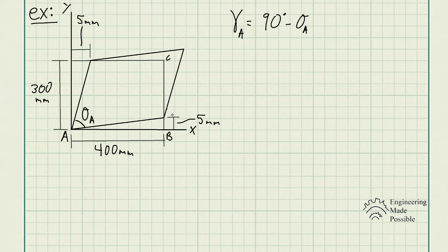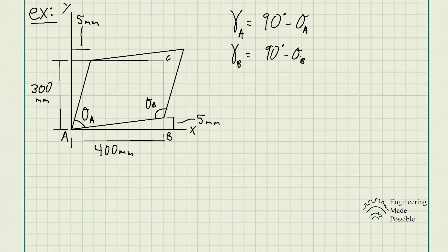For the shear strain at B, the angle theta B is actually greater than 90 degrees, so the shear strain at B equals 90 degrees minus theta B, which will be a negative number. When the angle at a corner decreases, shear strain is positive; when the angle increases, shear strain is negative.